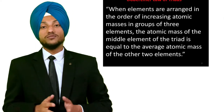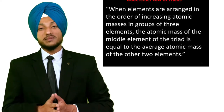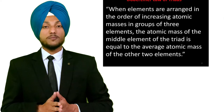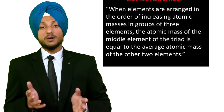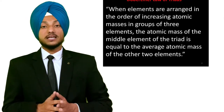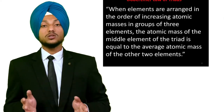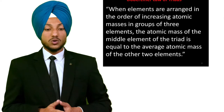Let's start with Dobereiner's Triads. When elements are arranged in the order of increasing atomic mass, groups of three elements known as triads having similar chemical properties are obtained. The atomic mass of the middle element of these triads is equal to the arithmetic mean of the atomic masses of the other two elements.